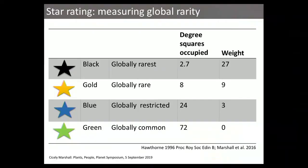There are many ways for a plant or an area to be important for conservation, but globally rare species — also called restricted range species or local endemics — are important because they're inherently vulnerable to extinction. We can quantify global rarity using the database. Species are assigned to one of four categories called a star rating. On average, black star species are found in 2.7 degree squares globally; green star species have wide distributions; and gold and blue star species are intermediate. We categorize ranges rather than using exact area of occupancy to avoid being artificially precise given uncertainties in the distribution data.